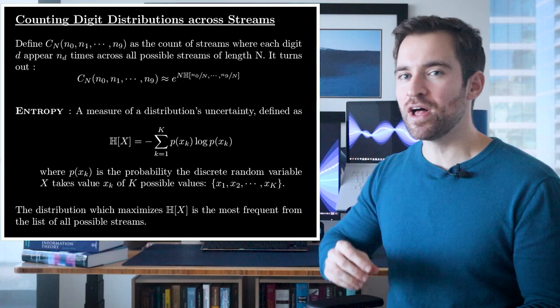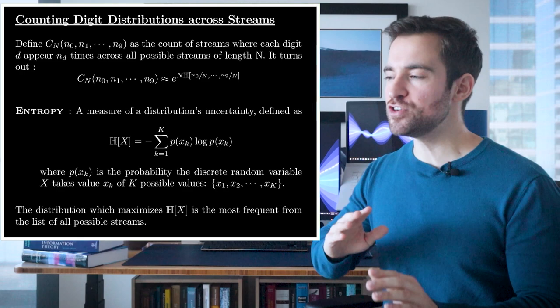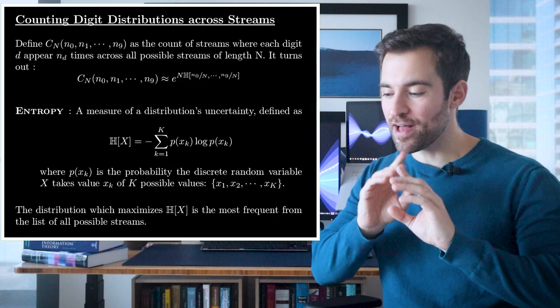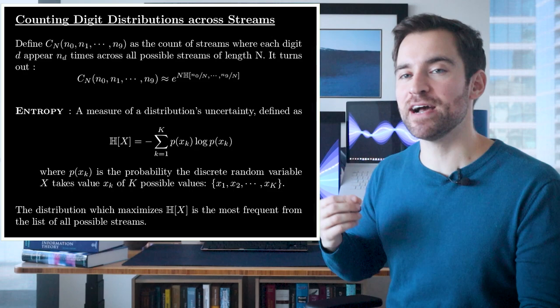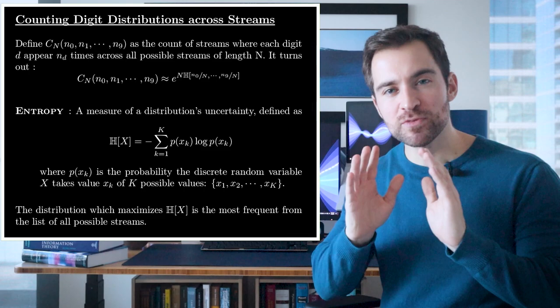It tells us more than that. Since the function is exponential, a small change in entropy makes for a giant difference. As the length of the stream gets large, a larger and larger proportion of streams have nearly maximal entropy. This quantifies our choice. If you don't know anything about a distribution, you should guess that which maximizes entropy, which means equal probabilities. Because of all possible streams, a huge majority of them have maximal entropy.